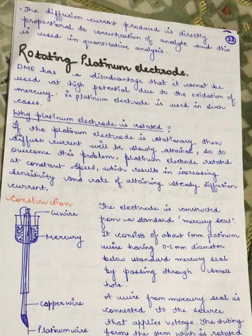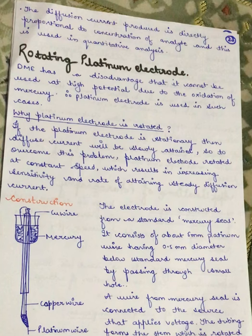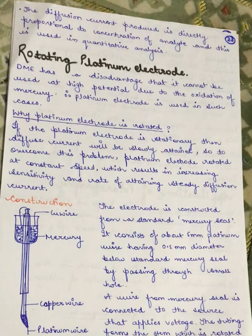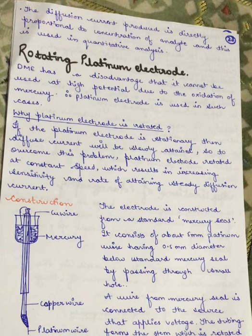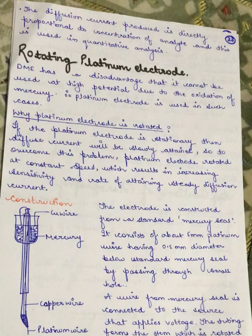The dropping mercury electrode has a disadvantage: it cannot be used at high potential due to the oxidation of mercury. Therefore, a platinum electrode is used in such cases. The platinum electrode is rotated because if it were stationary, the diffusion current would be attained very slowly. Rotating it at a constant speed increases sensitivity and the rate of attaining a steady diffusion current.